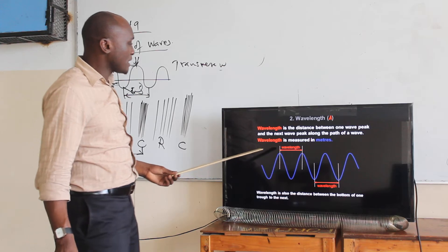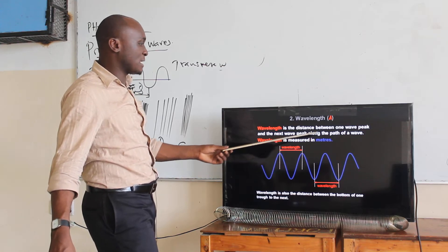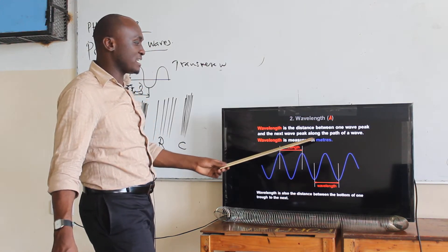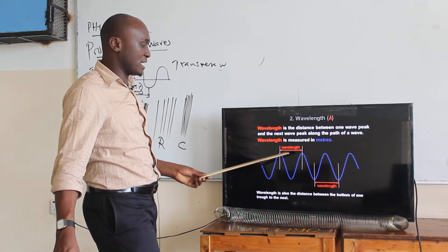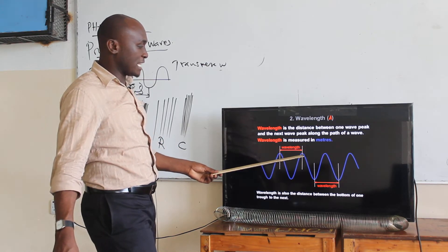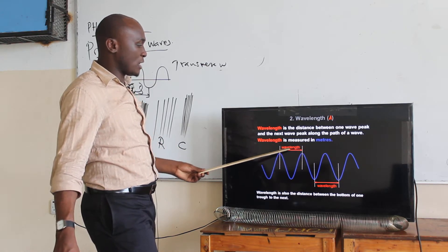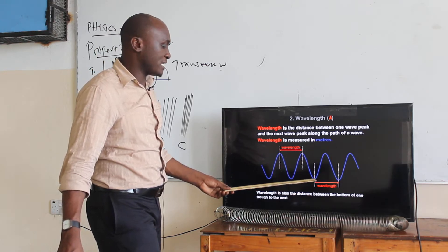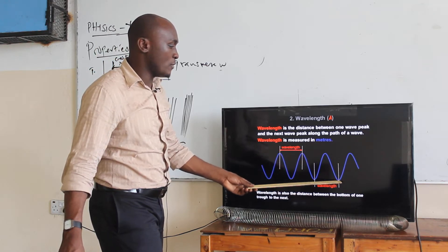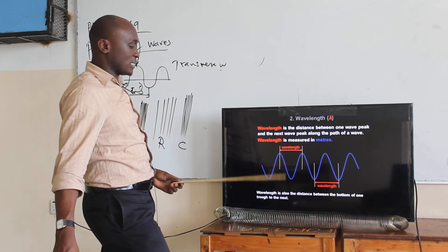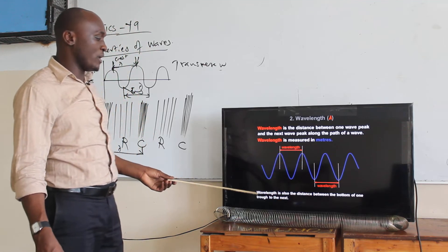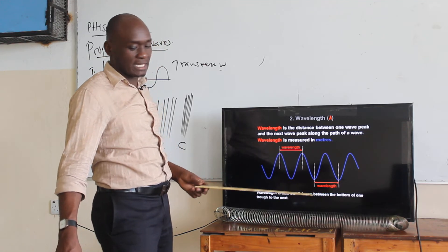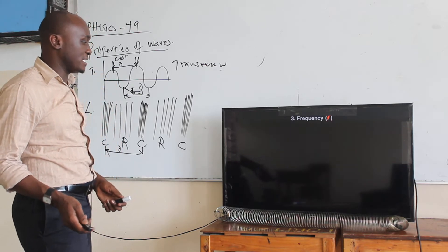You can see that the wavelength is the distance between one wave peak to the next wave peak along the path of the wave, measured in meters. This is the crest, this is another crest — that is the wavelength. You also have trough to trough, which is also our wavelength. The wavelength is the distance between the bottom of one trough to another.